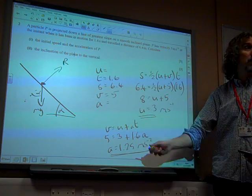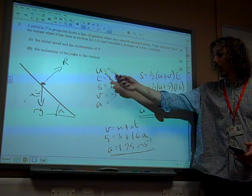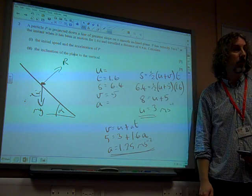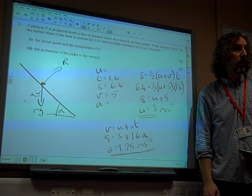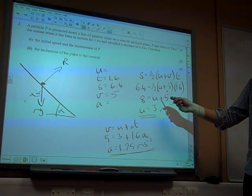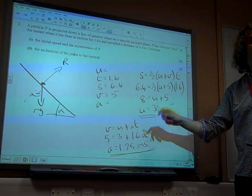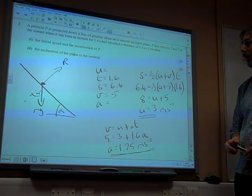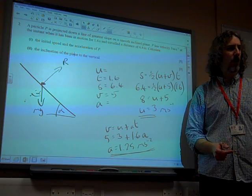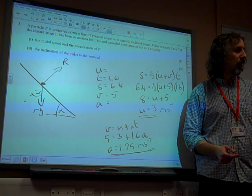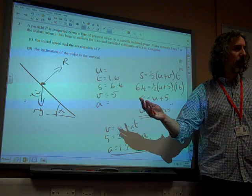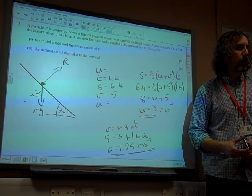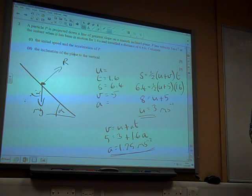It is worth noting there are a number of different ways that you can take this initial information and rearrange it to find those two things. I did it with U and then you could have found A first. However you want to do it. We're then asked to find... It's funny, how we're two questions in and it's all SUVAT all the way so far. We've got a whole page of SUVAT stuff at the beginning.